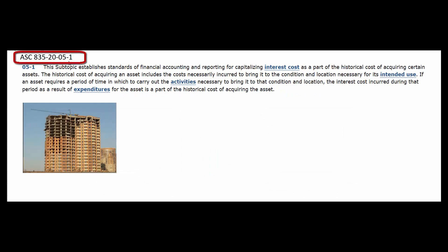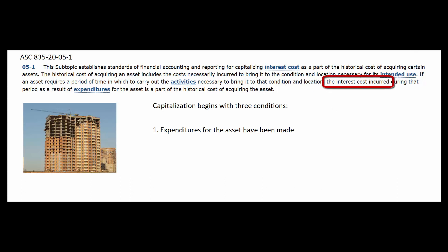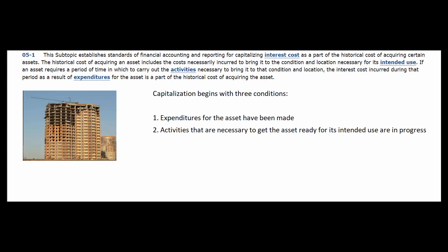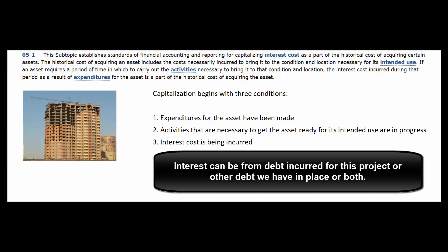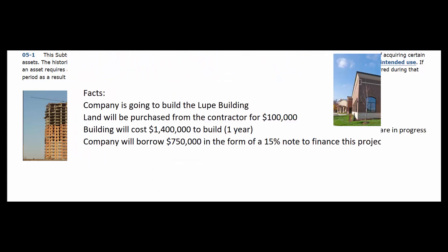This comes from ASC Topic 835, Subtopic 20, Section 5, Paragraph 1, which states that any cost necessary to bring an asset to the condition and location necessary for its intended use must be capitalized — and that includes interest. Capitalization begins when: first, expenditures for the asset have been made; second, activities necessary to get the asset ready for its intended use are in progress; and third, interest is being incurred, either from a specific construction loan or from general corporate borrowings.